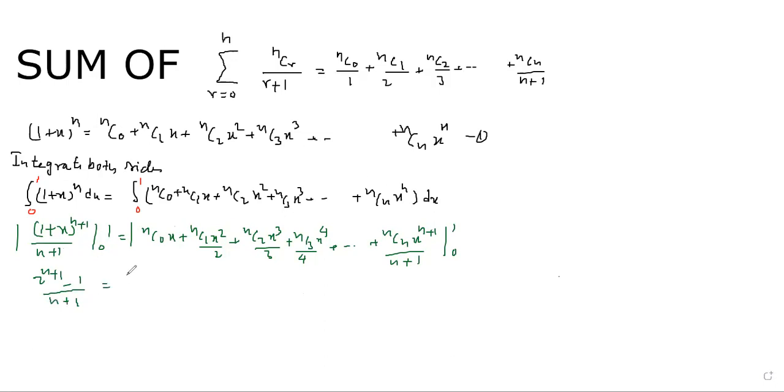And this is equal to nC0 plus nC1 by 2 plus nC2 by 3, likewise, nCn upon n plus 1. So this technique is binomial integration technique. Now we can use binomial technique. This is our method 1.